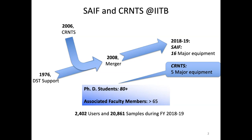SIF hosts about 16 major equipment and CRNTS has five major equipment. CRNTS is essentially the academic wing — we currently have about 80 plus PhD students guided by faculty colleagues from other departments. We have about 65 faculty members from other departments who have been guiding these PhD students and are involved in CRNTS and SIF activities. The CRNTS equipment are funded by the institute, IIT Bombay, but we are also making these facilities available to external users.